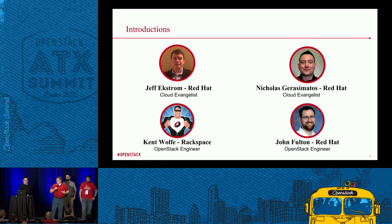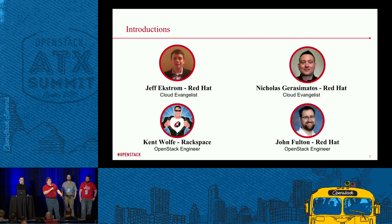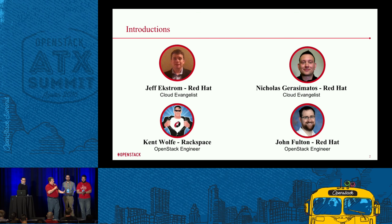Today, I'm going to be talking about our definition of enterprise grade as it relates to code, as it relates to best practices for implementation and to support. Nick is going to talk about the reference architecture for the Rackspace Private Cloud, powered by Red Hat, or RPCR for short. John is going to talk about some of the coding changes that Red Hat had to make to make this product a reality. And then Kent is going to talk about some of the implementation decisions that Rackspace made, as well as some of the next things coming up in the product partnership between the two companies.